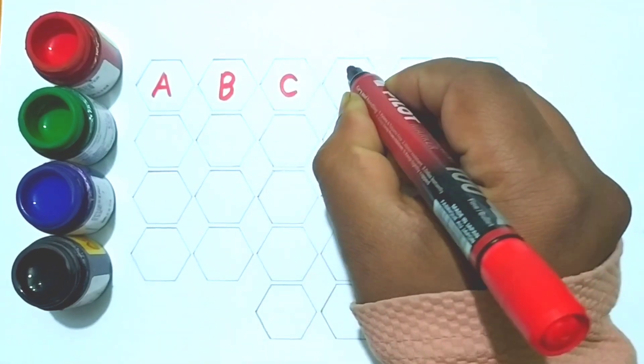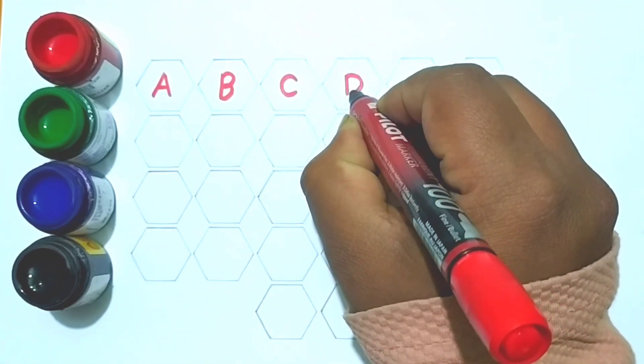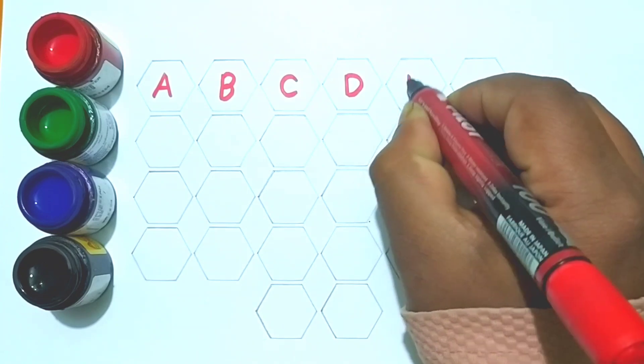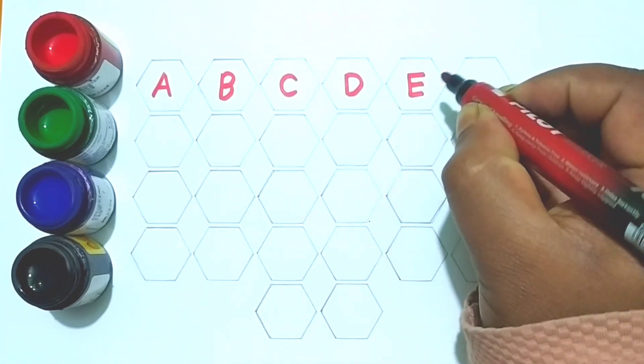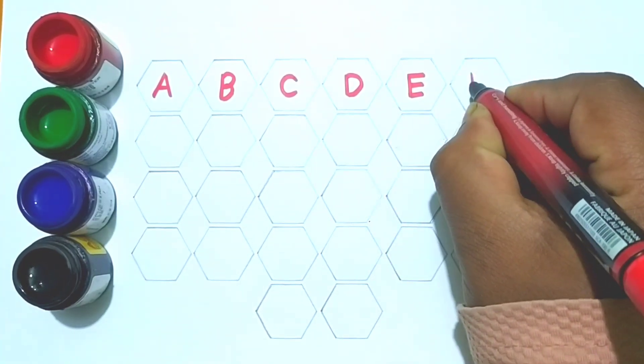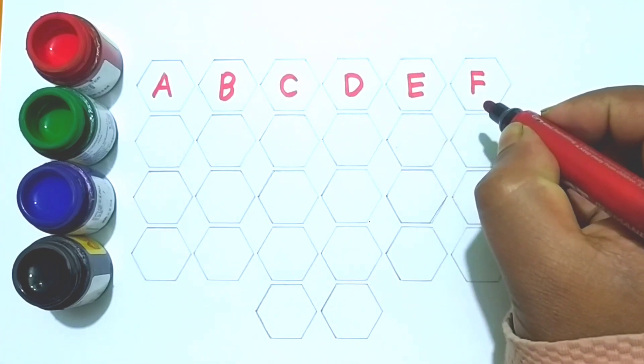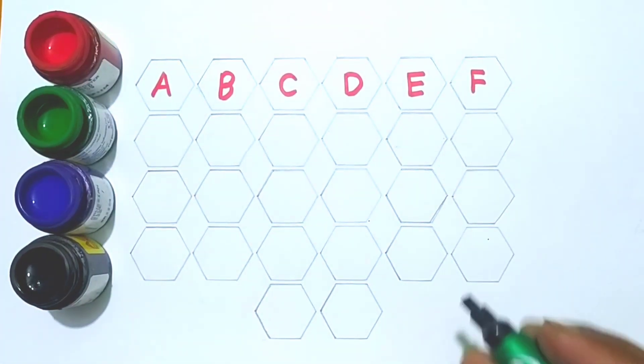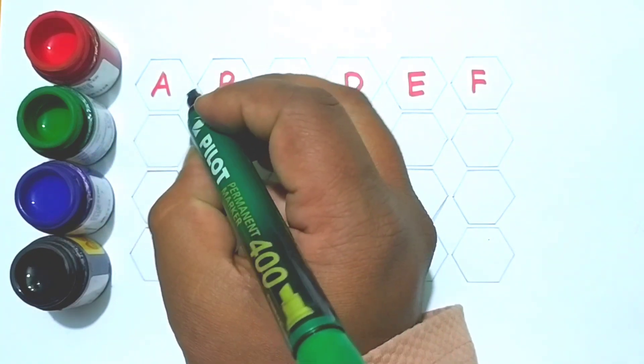C is for cat, D is for dog, E is for elephant, F is for fruits. Green color.